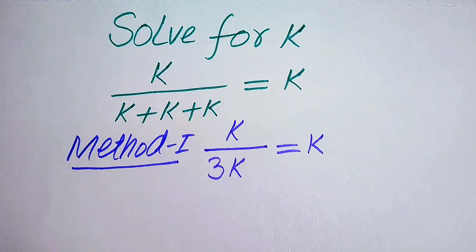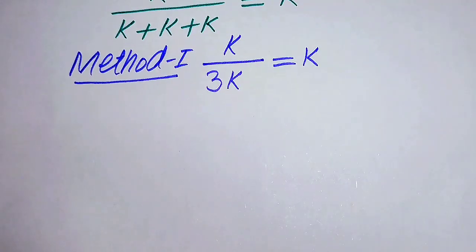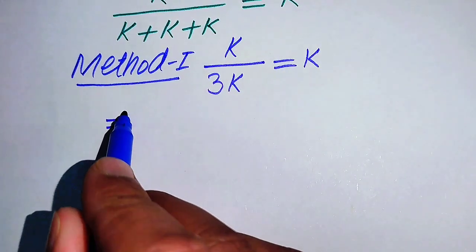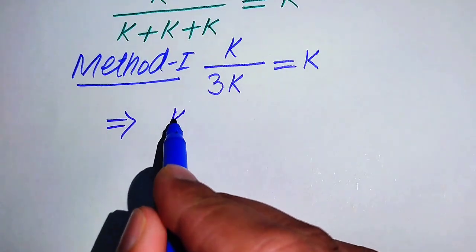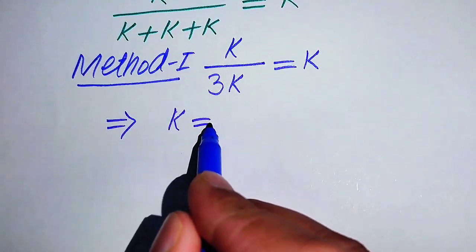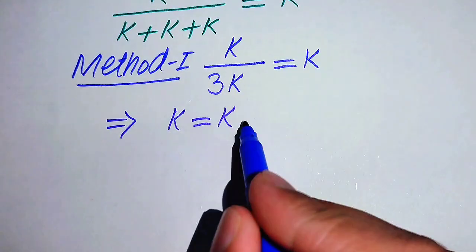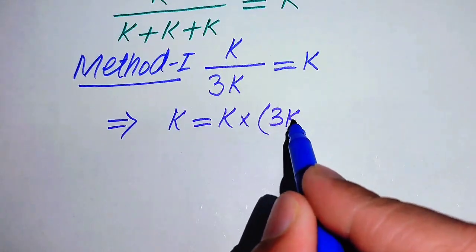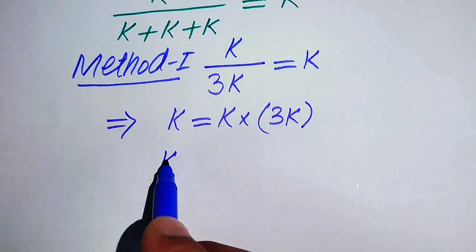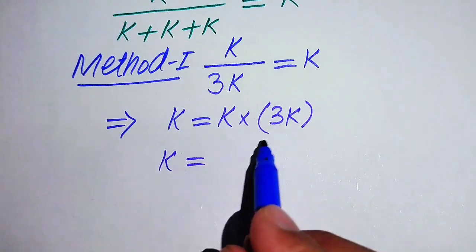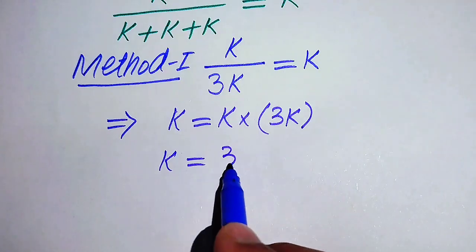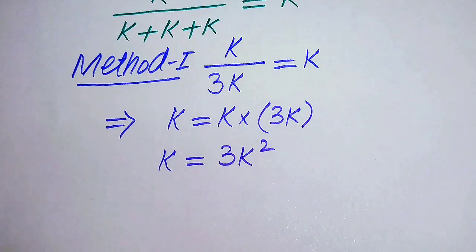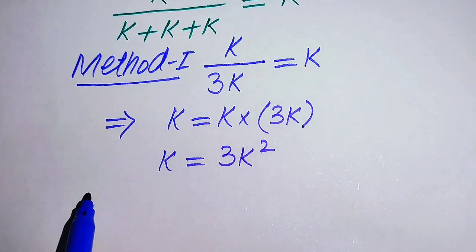In the next step, we move 3k from the denominator to the right-hand side, giving us k equals k multiplied by 3k, which becomes k equals 3k squared.